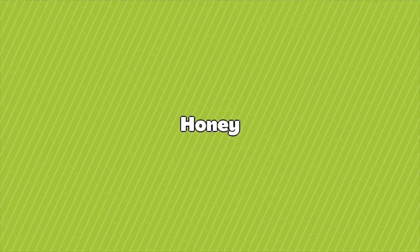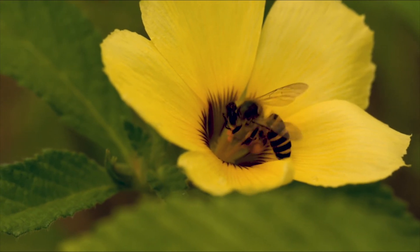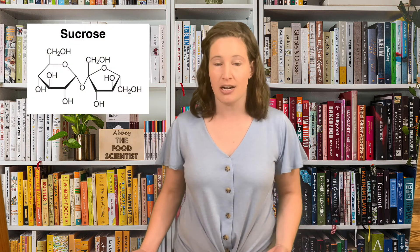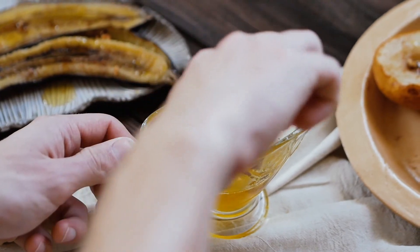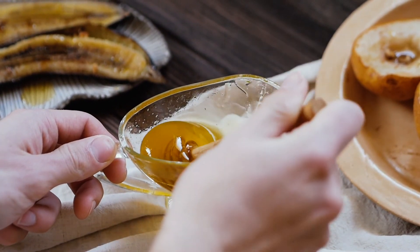Honey has recently become really popular as a sweetener because people see it as a more natural option — it's made by honey bees from flower nectar. The main sugar in flower nectar is sucrose, but honey bees have an enzyme in their saliva that clips most of that sucrose apart into glucose and fructose. So by the time we see honey in the store, it's mostly glucose and fructose, making it very similar to invert sugar, with maybe a small amount of sucrose and some other minor sugars.